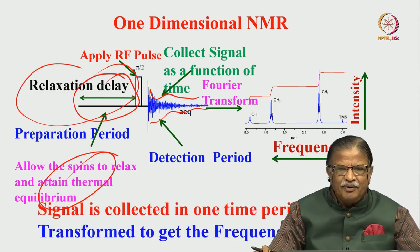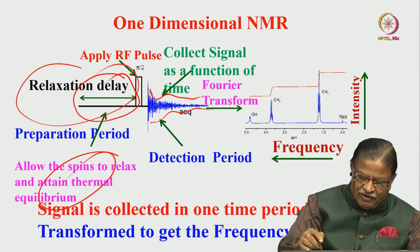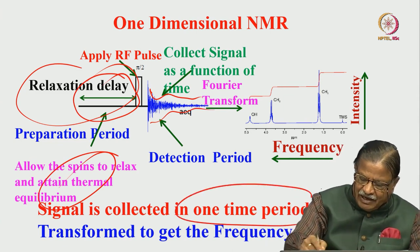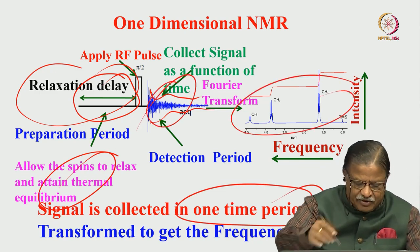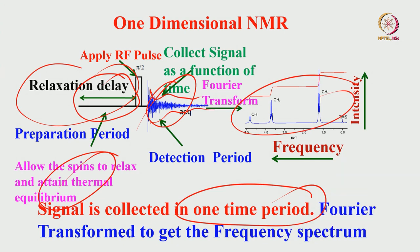In this 1D NMR experiment, the signal is detected in one time period. You do the Fourier transformation and get the frequency. So one-dimensional NMR means you collect the signal in one time domain, do the Fourier transformation, and get the frequency spectrum. This is a conventional simple one-dimensional NMR.